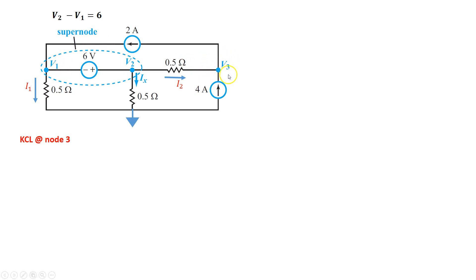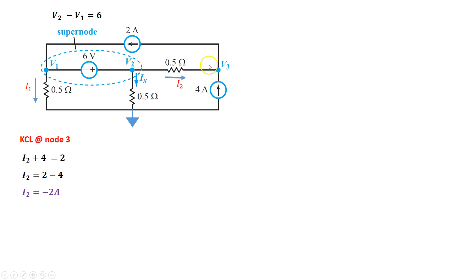Next, I want to do a Kirchhoff's current law at node 3. Current coming in is I2 and 4A, so I2 plus 4 equals 2A coming out. Simplifying, I2 equals 2 minus 4, which is negative 2A. So the current is negative 2, which basically means the arbitrary current direction I had chosen is actually flipped — V3 is at a higher potential than V2. We don't need to make any changes; we leave I2 as negative 2 and proceed accordingly.